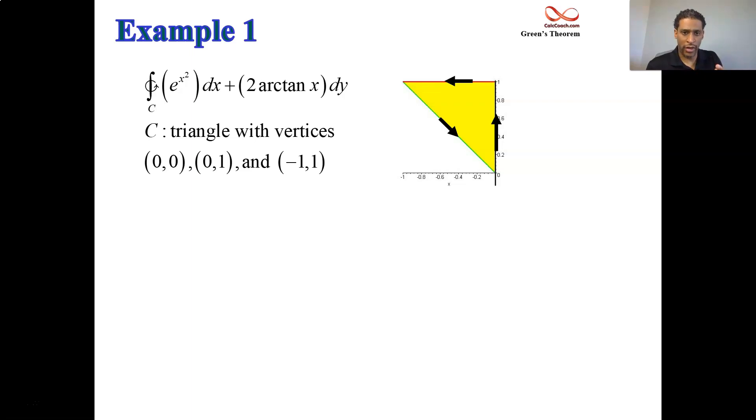So we have a closed curve, it's piecewise smooth, it's simple, it's positively oriented. The region inside is colored in here, that's the region R. And we want to look at the possibility of trading this in for a double integral over that region.